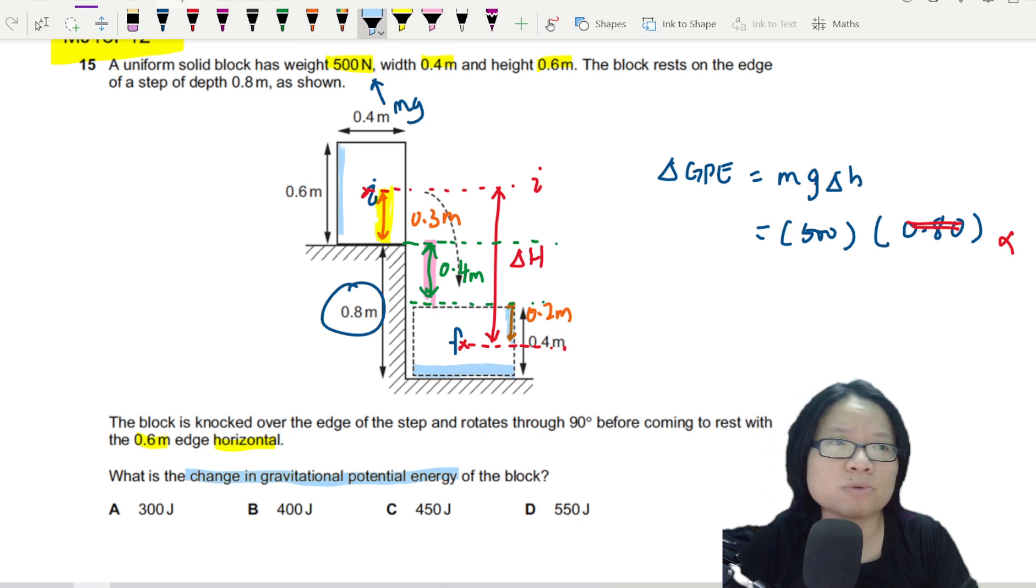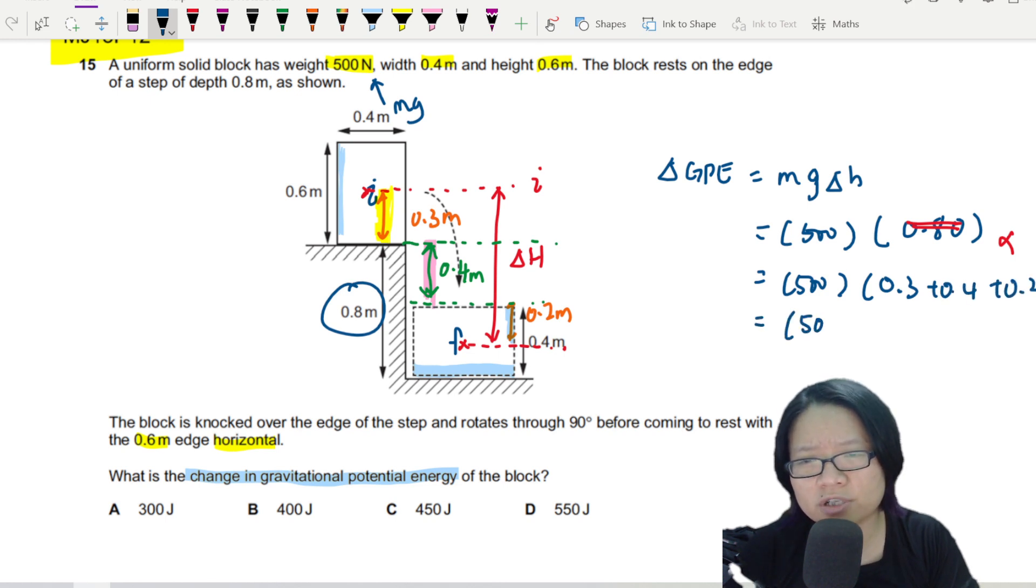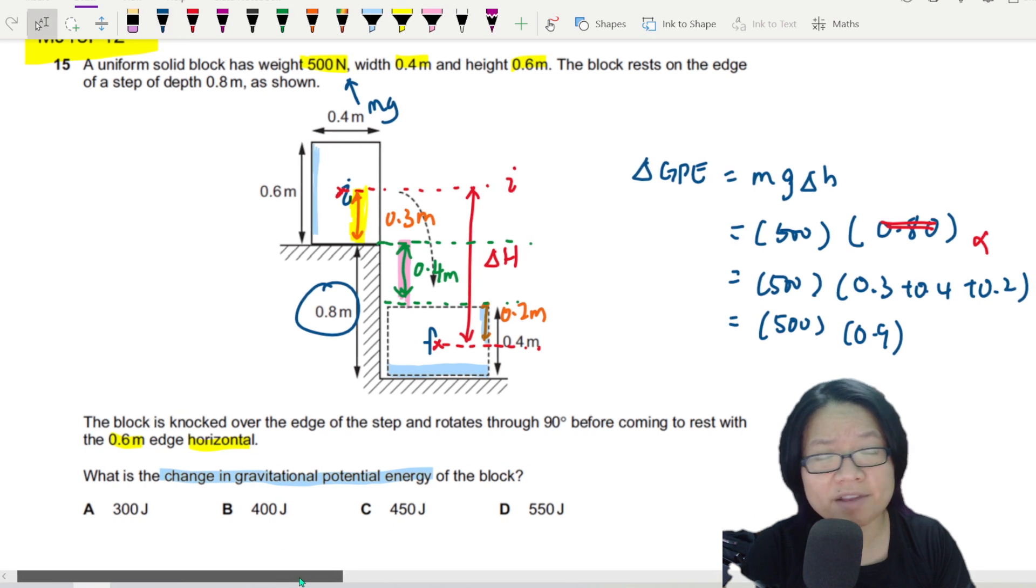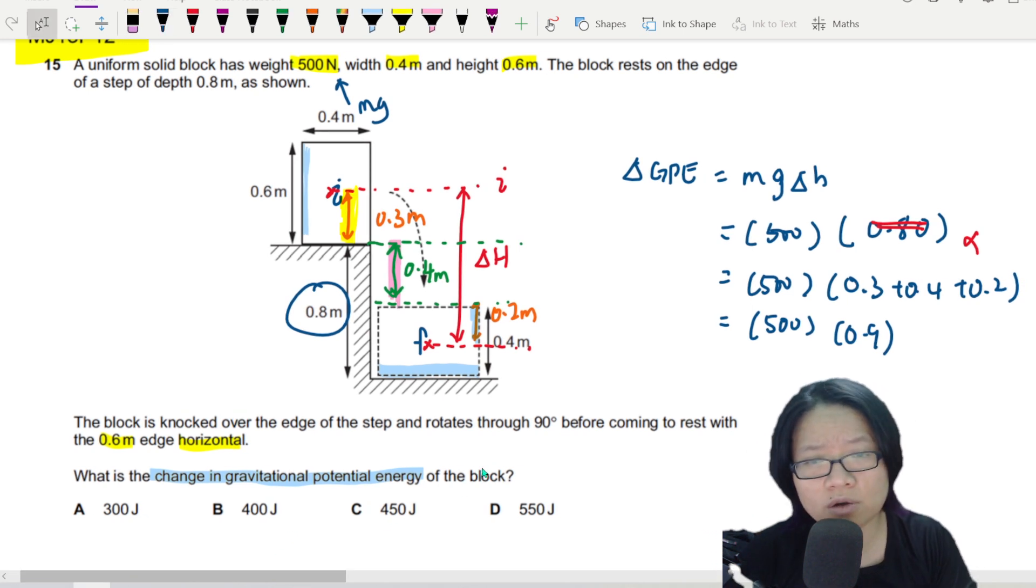So I'm going to put that in. The change in GPE will be 500 times 0.3 plus 0.4 plus 0.2. This will be 500 times 0.9 - 0.3, 0.2, 0.9 - and finally this will allow you to come up with the answer of 450 Joules.